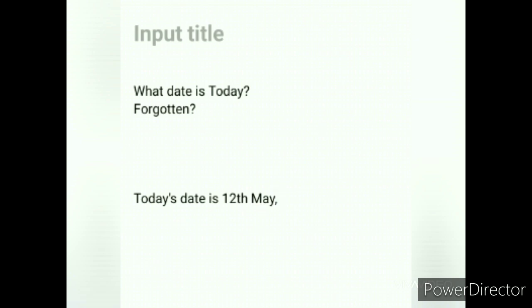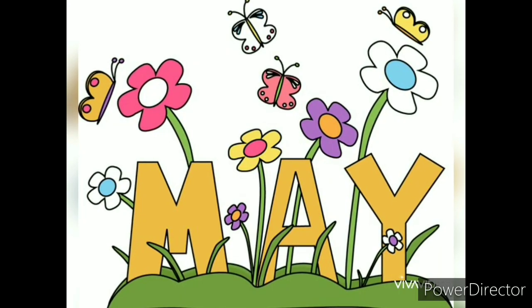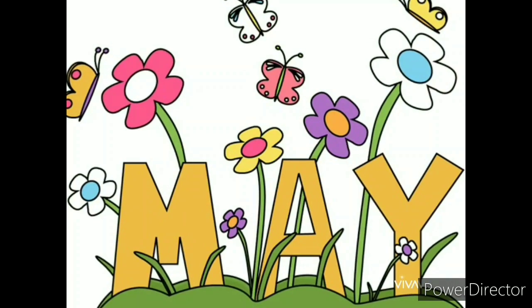So, what date is today? Today's date is 12th May 2020. Now, all of you tell me which month is this? Just now I told you. This month is May.